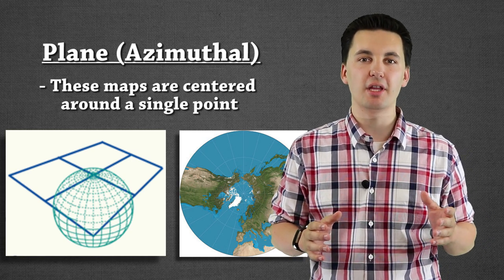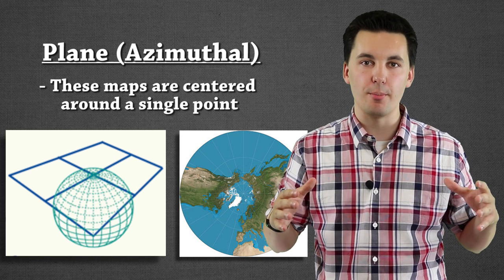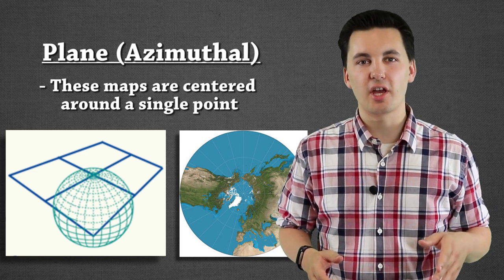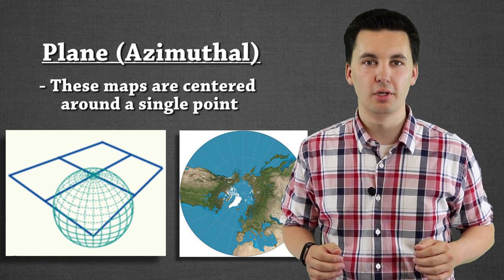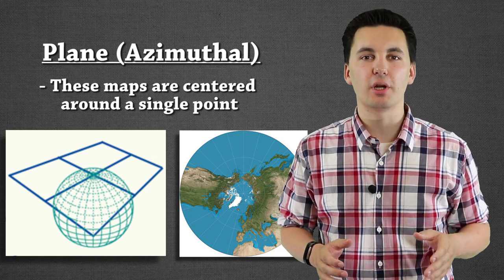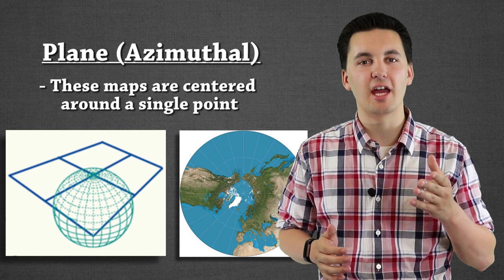And what's going to happen then is we're going to trace everything from that point. This displays directions and also angular relationships from a central point extremely well. However, where it struggles is when it comes to its actual distance and its shape.